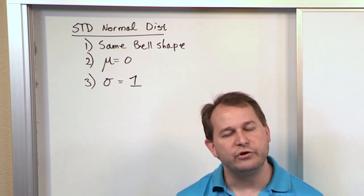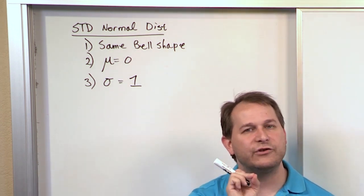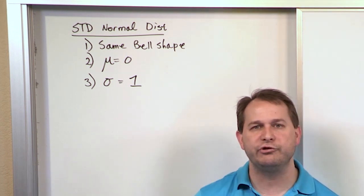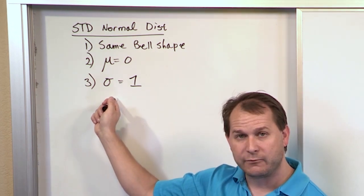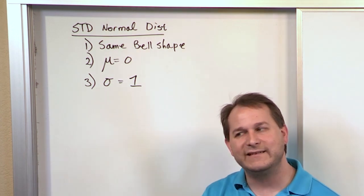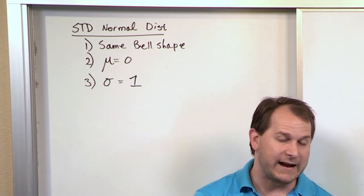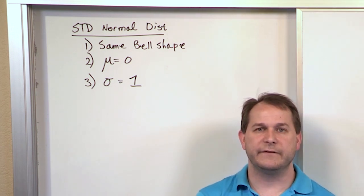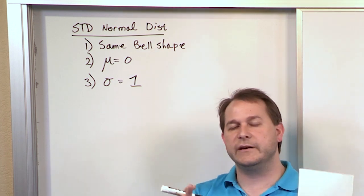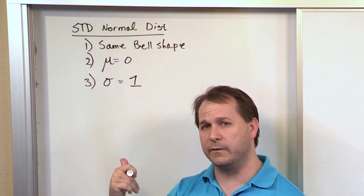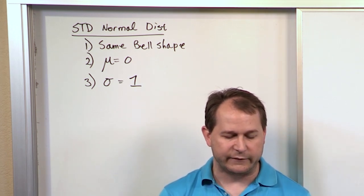We can change any normal distribution we want into standard form, and then use the table to calculate the area and get our answer. For all the problems we solve, you'll need to figure out the relevant information, change the normal distribution into standard form, and then use the table to calculate the answers.